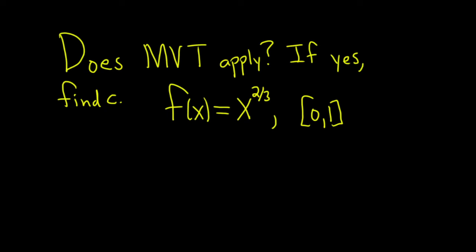Hi, in this problem we're being asked if the mean value theorem applies and if it does find the value of c. Our function is f of x equals x to the two-thirds and our interval is zero one. Let's go ahead and work through this solution.